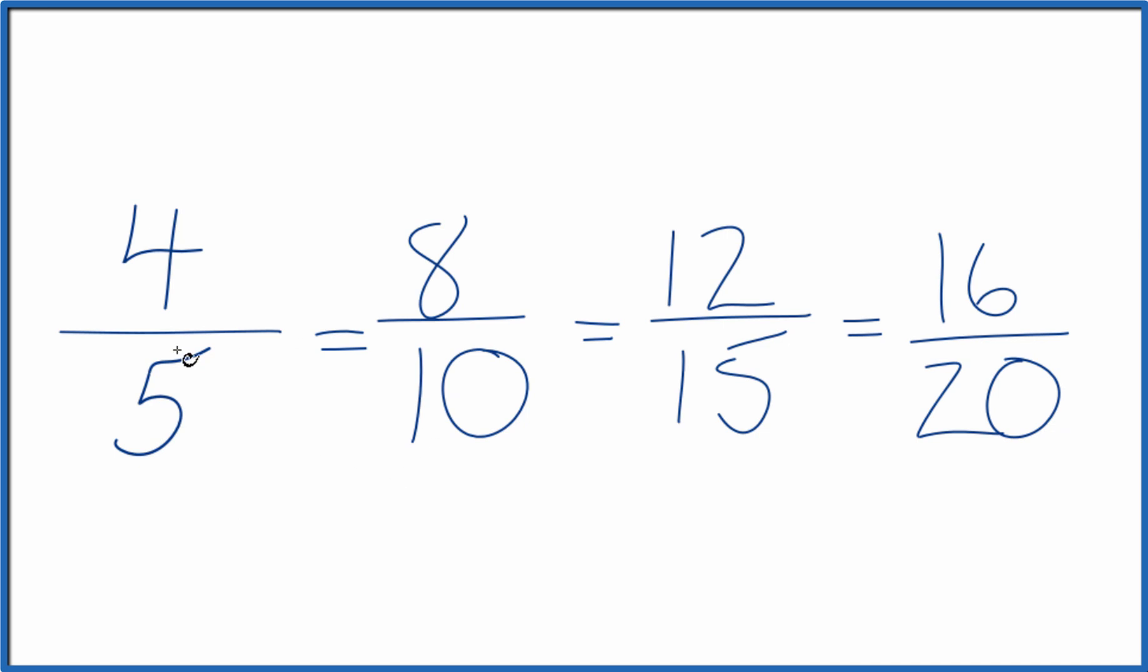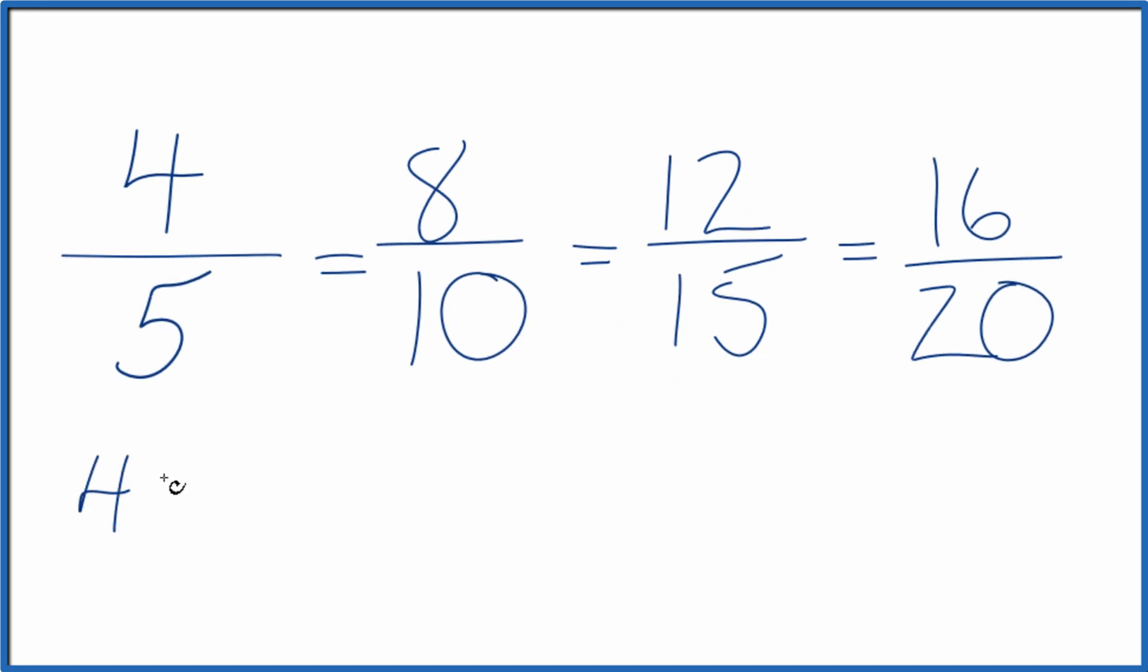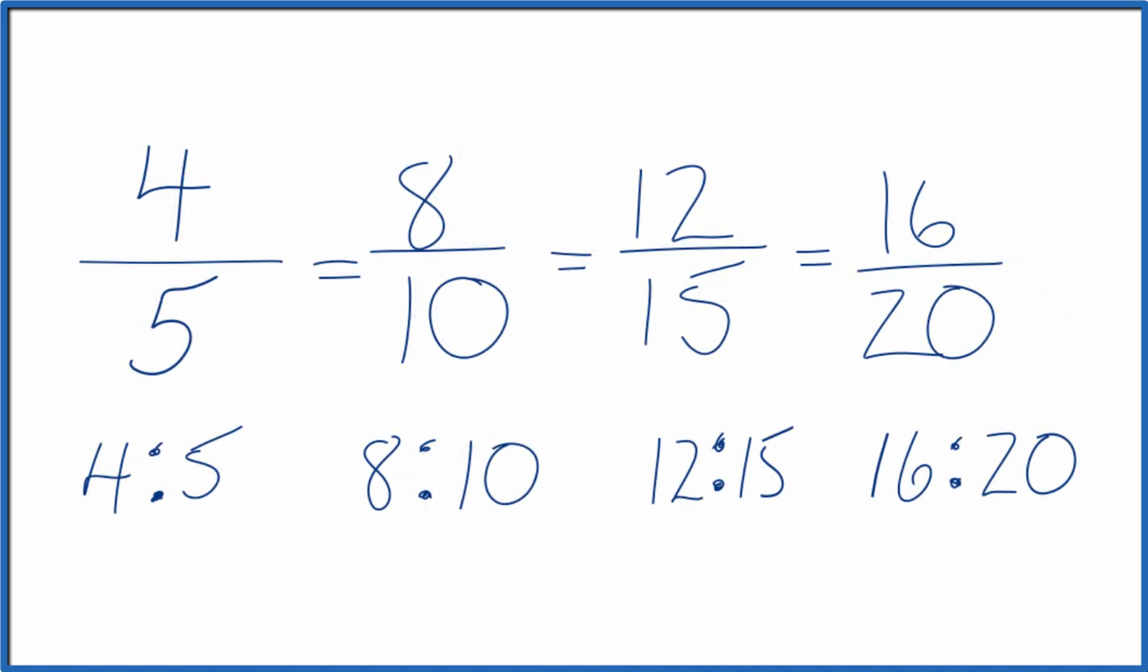You could also write it just as ratios, like 4 to 5 or 8 to 10, and so on. So that's how you find equivalent ratios for 4 fifths.